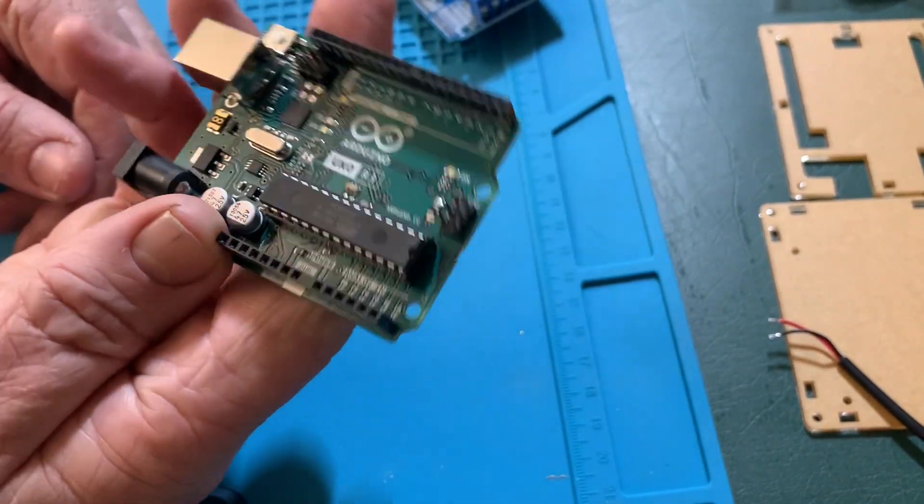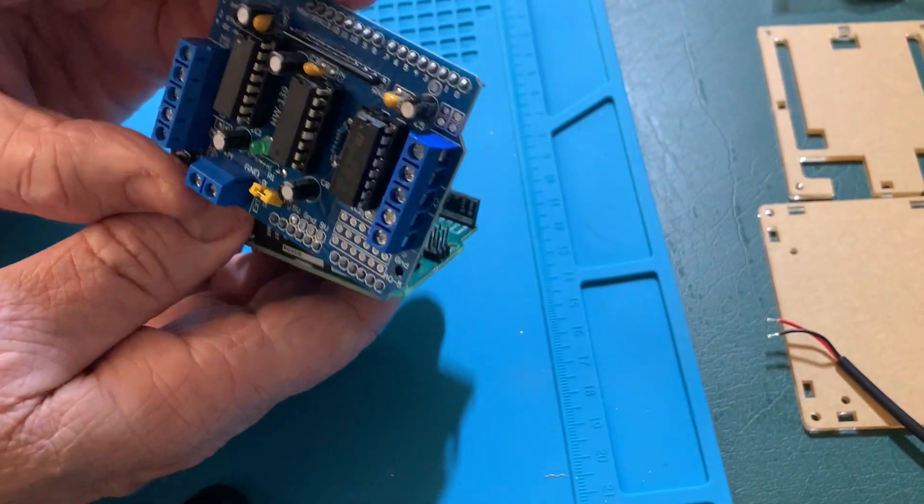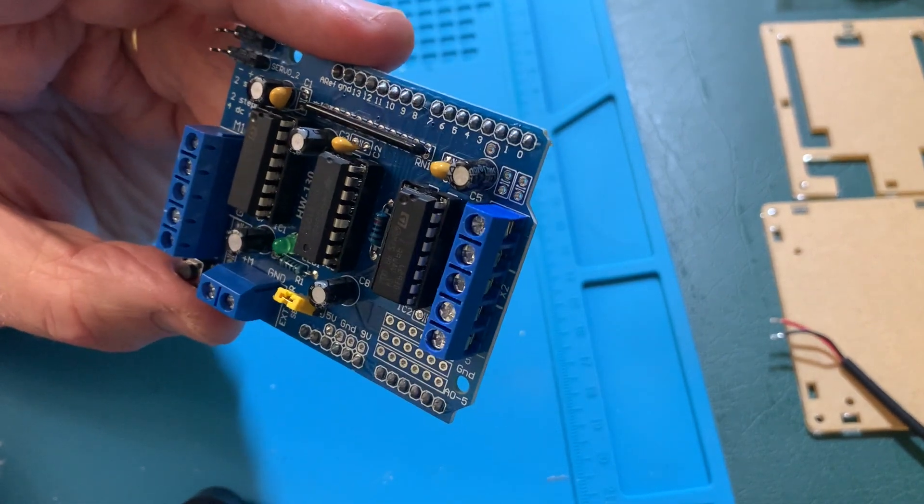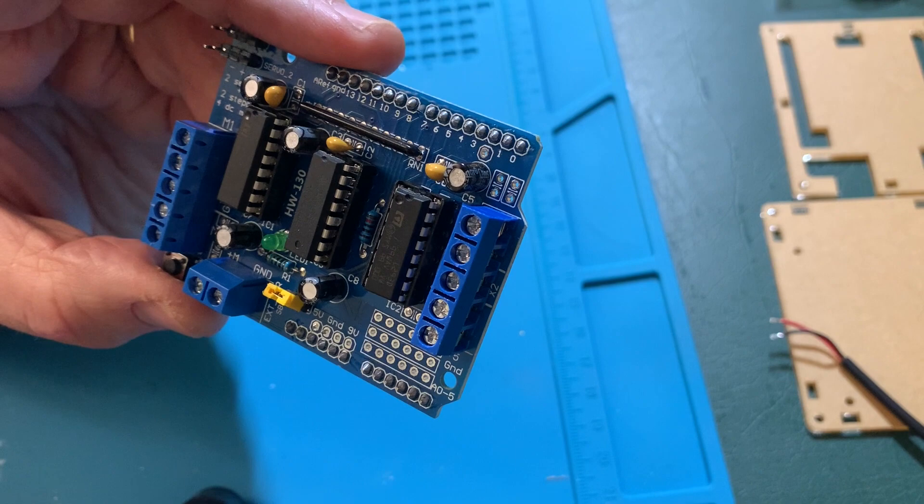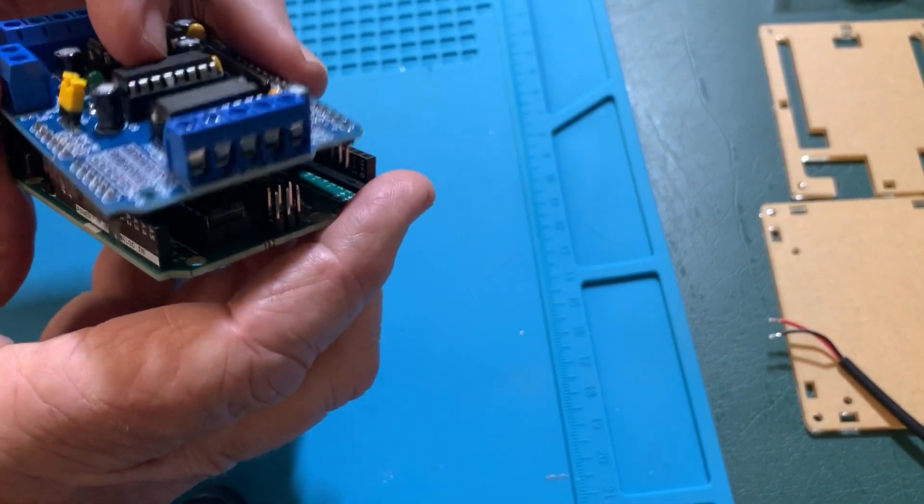The Arduino is designed to take what are called shields. This is a motor shield. The motor shield does what it sounds like. It drives motors. And so we are going to take these two and we're going to put one on top of the other. That's why it's called a shield. It's on top of as a protector.